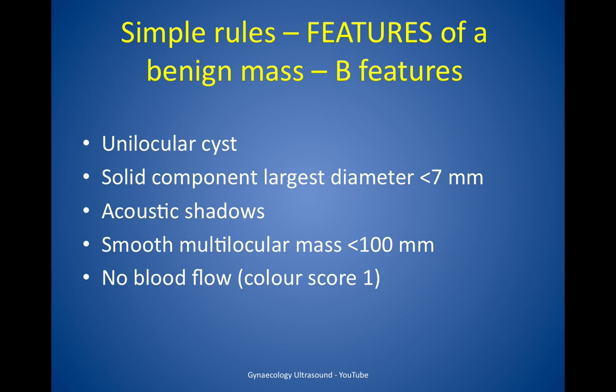The features of a benign mass — the B features — are: a unilocular cyst; if there is a solid component but the largest diameter of it is less than 7mm; the presence of acoustic shadows; if the mass is smooth and multilocular less than 100mm; and if there's no blood flow — a colour score of 1.